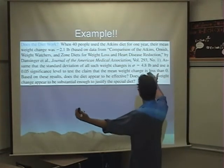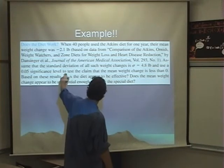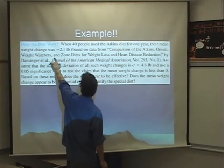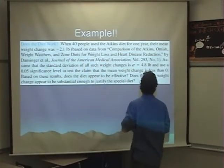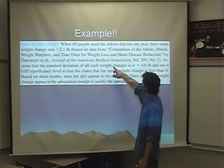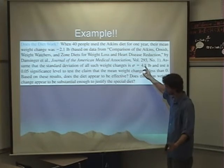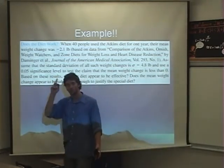When 40 people used the Atkins diet for one year, their mean weight change was negative 2.1 pounds. And it's a bunch of stuff, so I just passed that. Assume the standard deviation of all such weight changes is sigma equals 4.8. We know that's going to be pretty important.